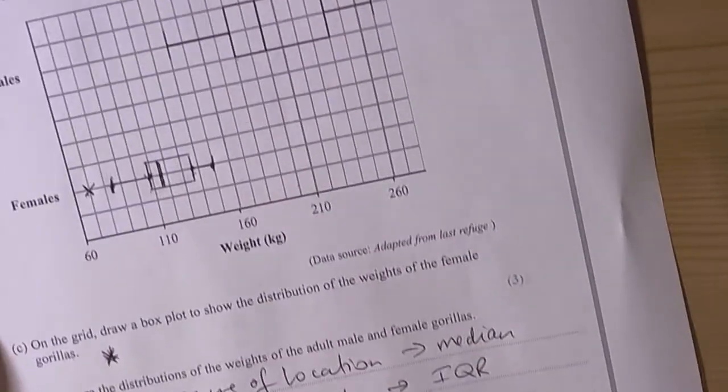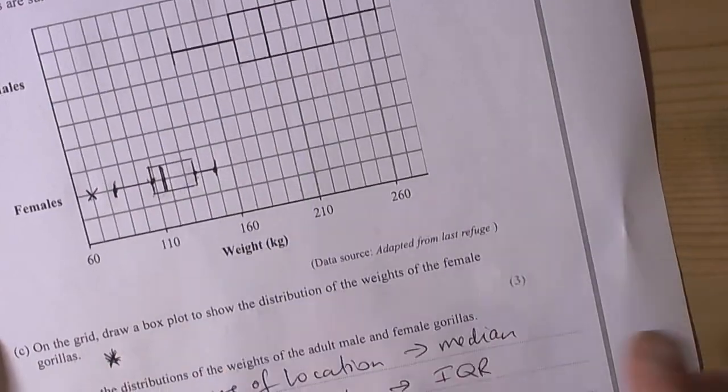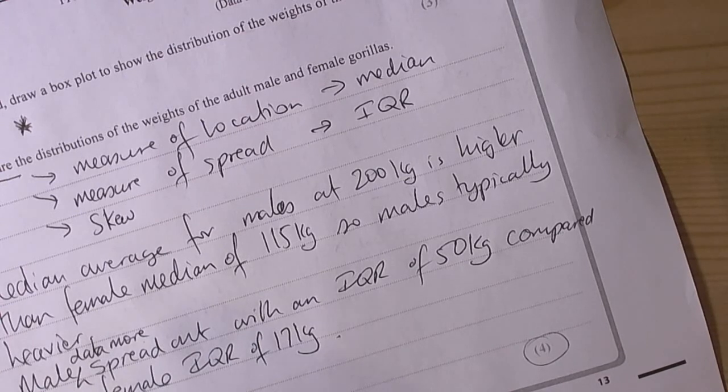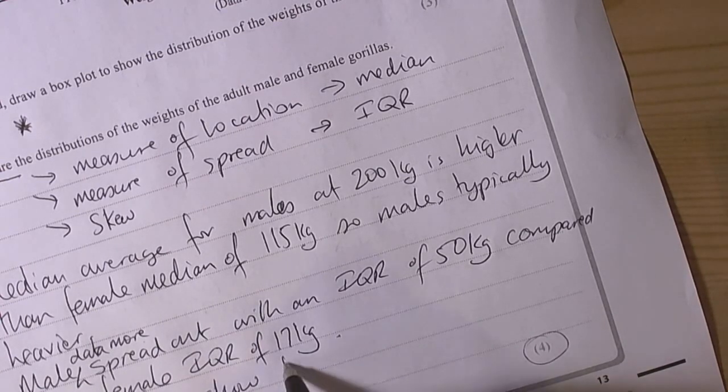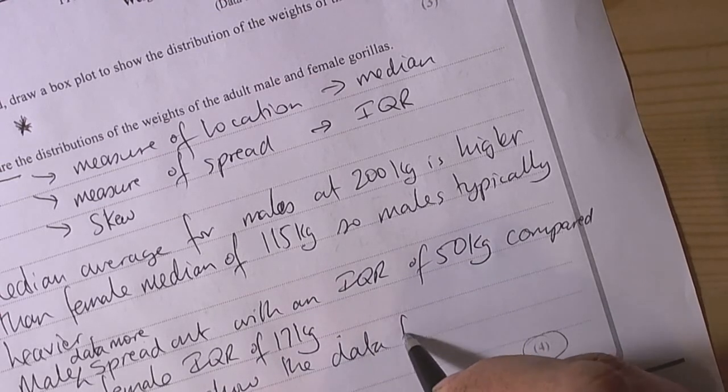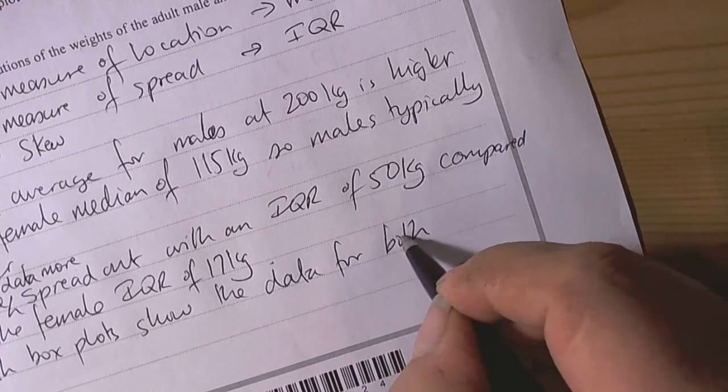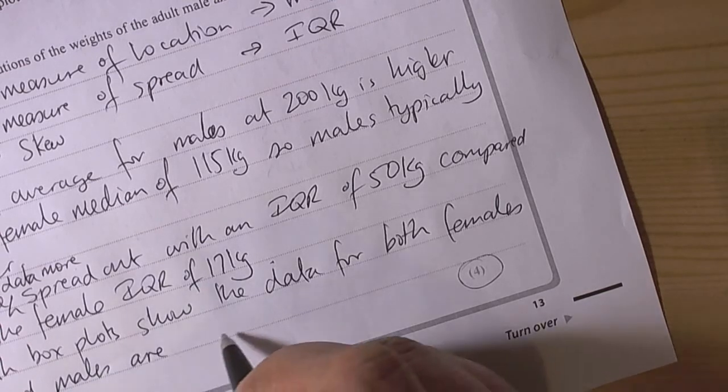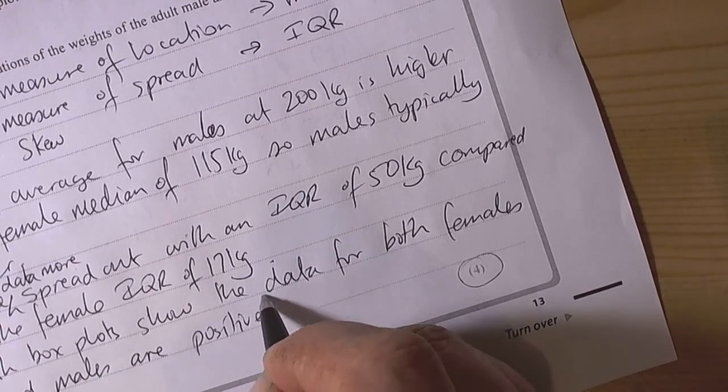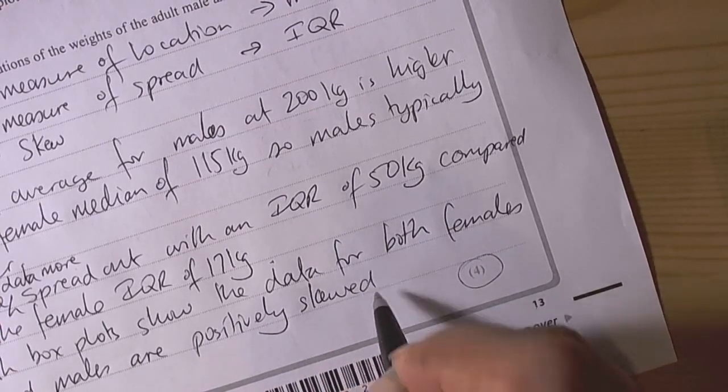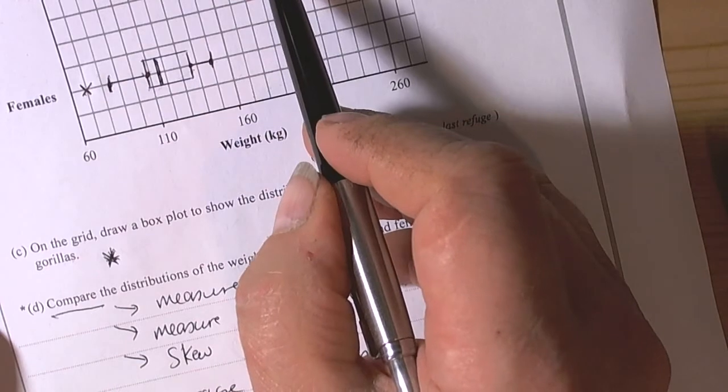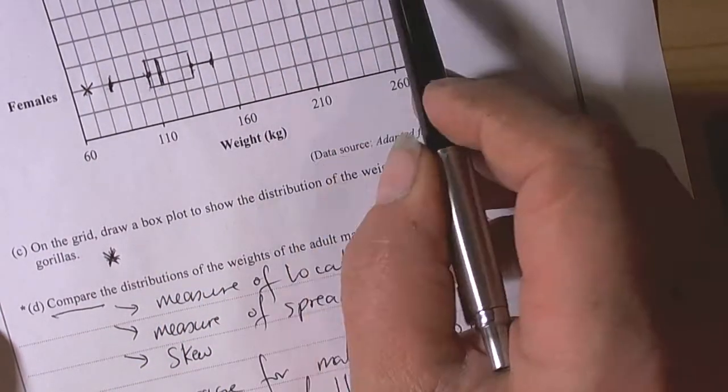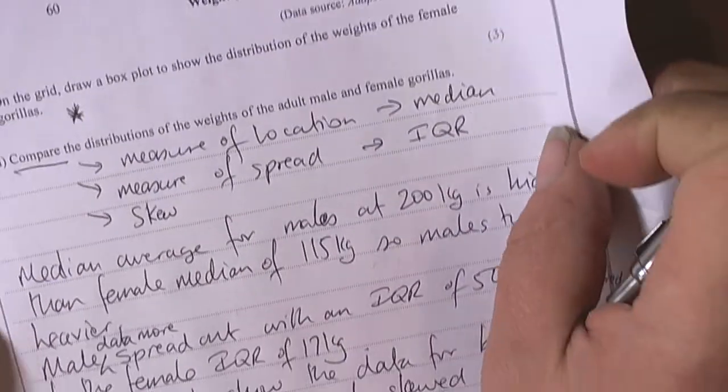So in other words the female data is more consistent in the middle. The skew, basically both box plots show the data for both females and males are positively skewed. So basically the lower half of the data is less spread out than the upper half of the data which is more spread out. So that's what the skew is trying to suggest to us.